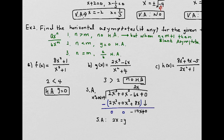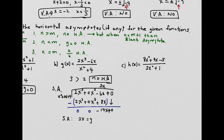Example 2c: h of x equals 8x squared plus 9x minus 5 all over 2x squared plus 1. To find the horizontal asymptote, compare the exponents: square versus square — they are the same. When the degrees are equal, the horizontal asymptote is the leading coefficient of the numerator over the leading coefficient of the denominator: 8 over 2, which equals 4. So the horizontal asymptote is y equals 4.